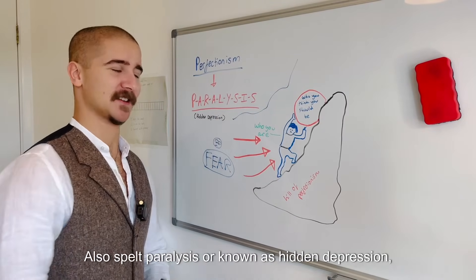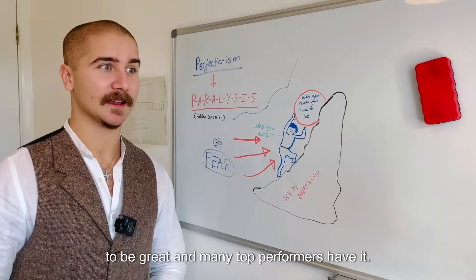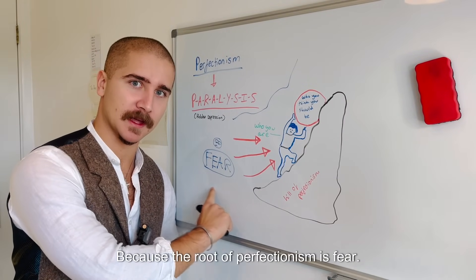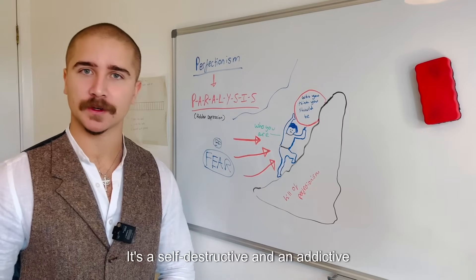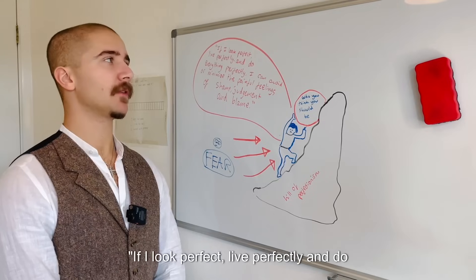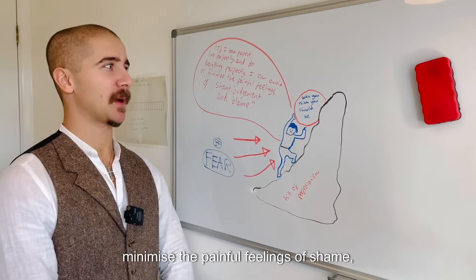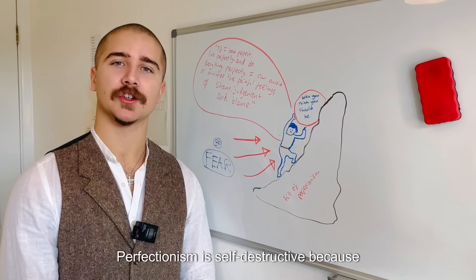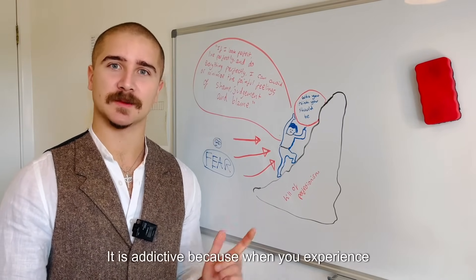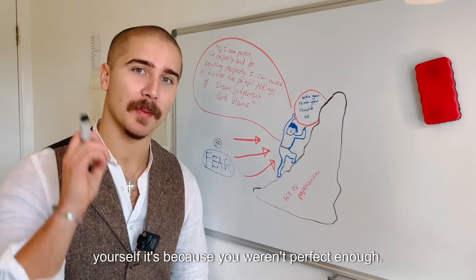Perfectionism, also spelled paralysis or known as hidden depression, is often argued it comes from the desire to be great and many top performers have it. But this is wrong because the root of perfectionism is fear. It's a self-destructive and addictive belief system that fuels this primary thought: if I look perfect, live perfectly and do everything perfectly I can avoid or minimize the painful feelings of shame, judgment and blame.